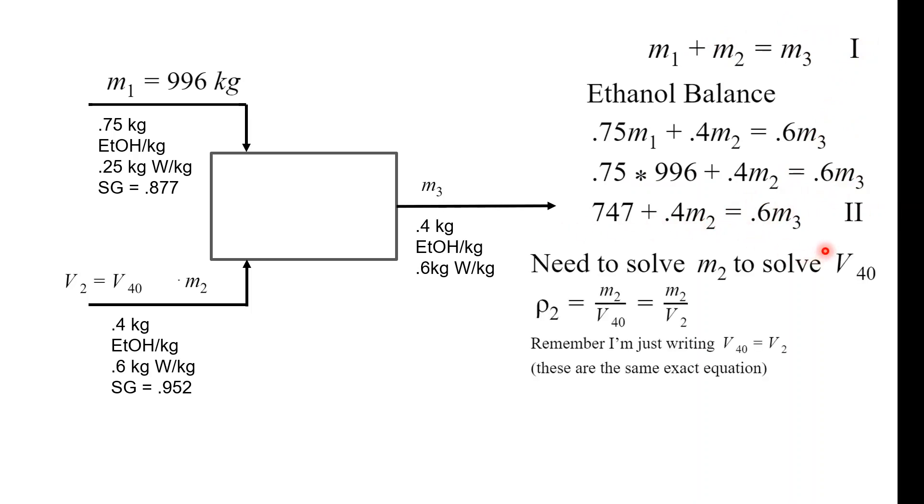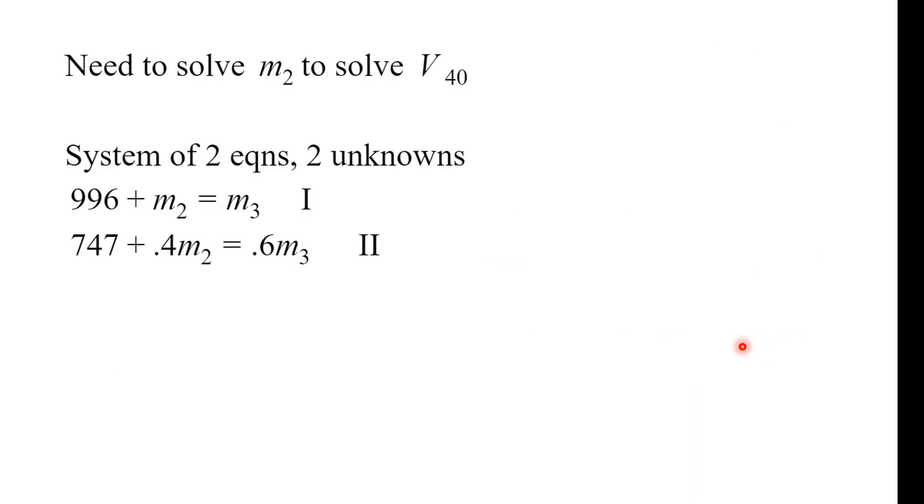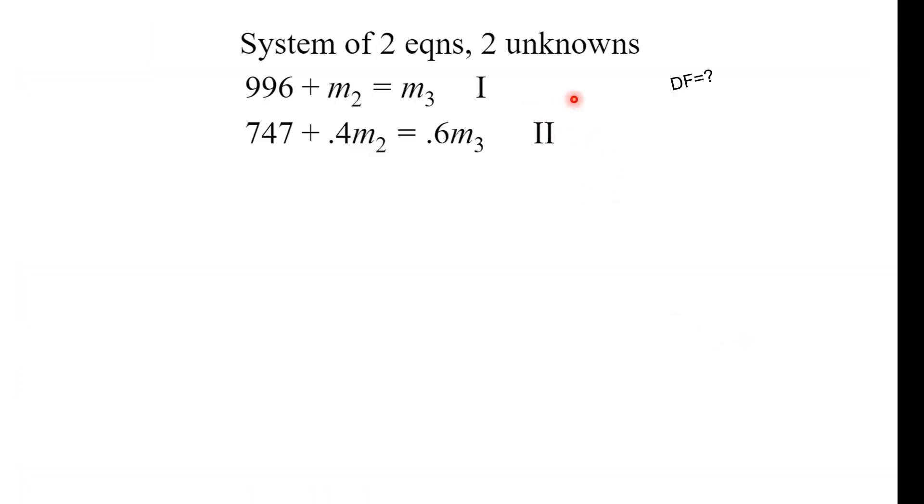So, we have one equation for the overall mass balance, second equation for the ethanol balance. Great. Now, we need to solve for M2 to solve for V40, which is this guy. And remember, I'm just using this notation. It's the same equation, though. Alright, so now we have a system of two equations and two unknowns. What time is it? It's algebra time. And the degrees of freedom. So, we have two equations and two unknowns. And all you have to do is subtract the number of equations, the number of unknowns, to get zero. And if it's zero, that means we can solve for it algebraically. It's non-zero. And something's wrong.